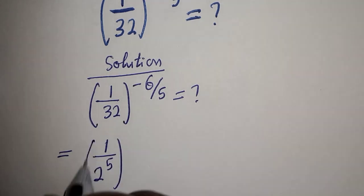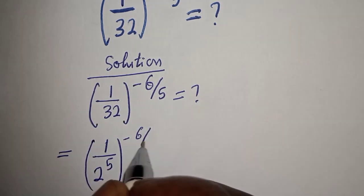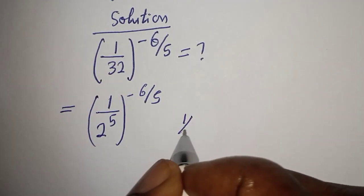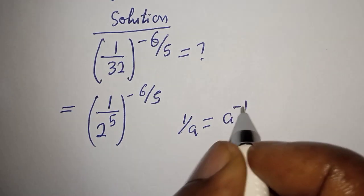To the power of minus 6 over 5. If you have 1 over A, this equals A raised to the power of minus 1.